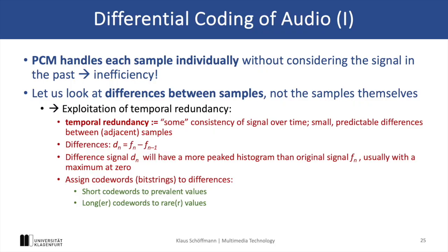Now let's discuss differential coding of audio. Differential coding is introduced to address inefficiencies in the basic PCM, and the idea here is to take advantage of temporal redundancies between consecutive samples which are often very similar. So instead of encoding the absolute values of each sample, we encode the differences between them, and this reduces the amount of data to be transmitted or stored since smaller values can be represented with much fewer bits.